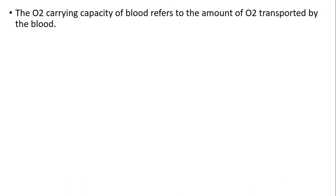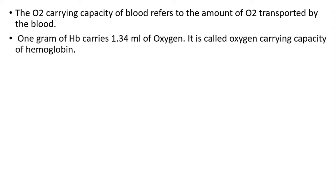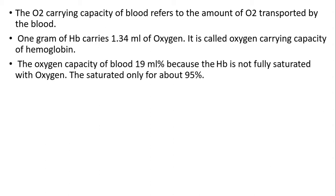The oxygen carrying capacity of the blood refers to the amount of oxygen transported by the blood. One gram Hb carries 1.3 ml of oxygen — this is called the oxygen carrying capacity of hemoglobin. The oxygen capacity of the blood is 19 ml. Because Hb is not fully saturated with oxygen,